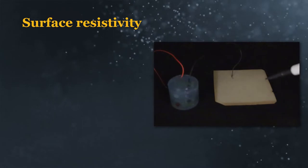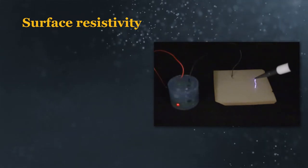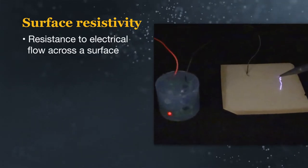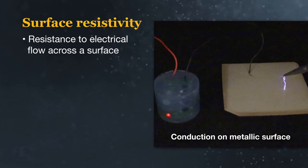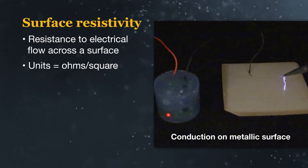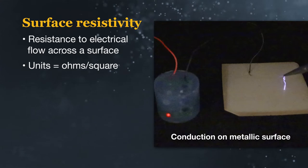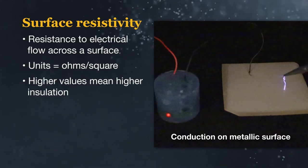The next property is surface resistivity. This is a measurement of the resistance of a material to allow electricity to flow over its surface. This is a less common measurement and is utilized in thin film applications such as conformal coatings. Values greater than 10 to the 8th ohms per square are typically considered acceptable.